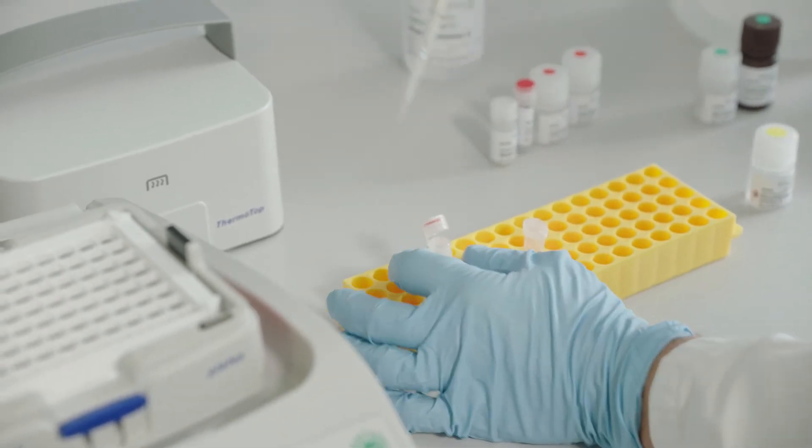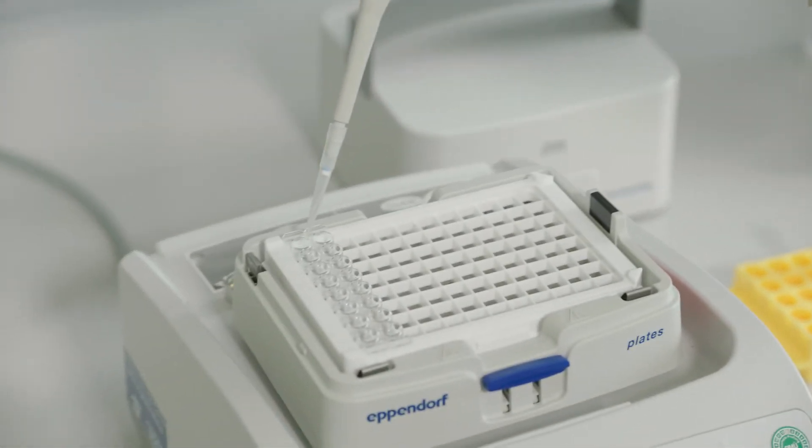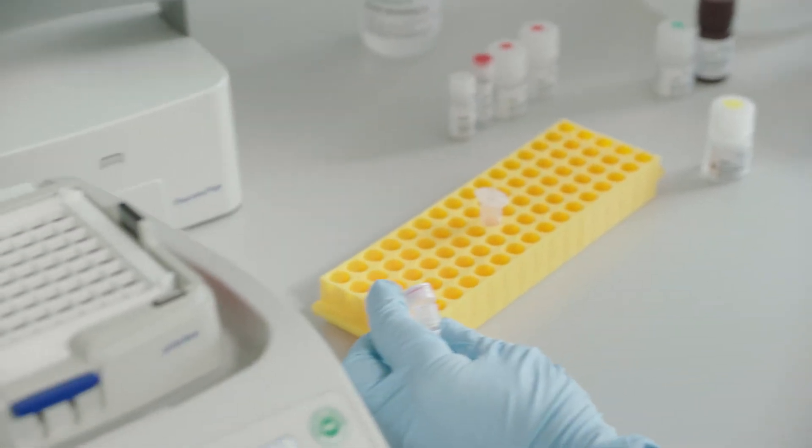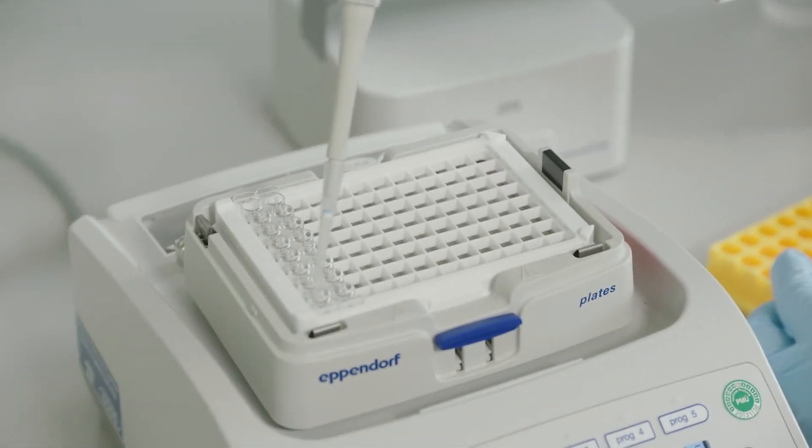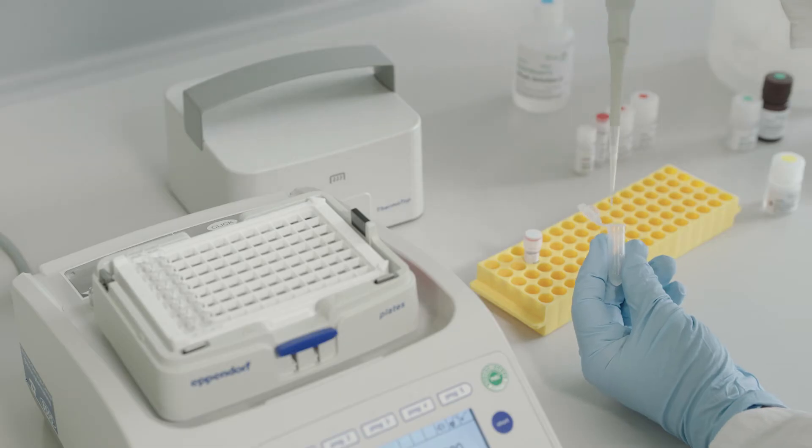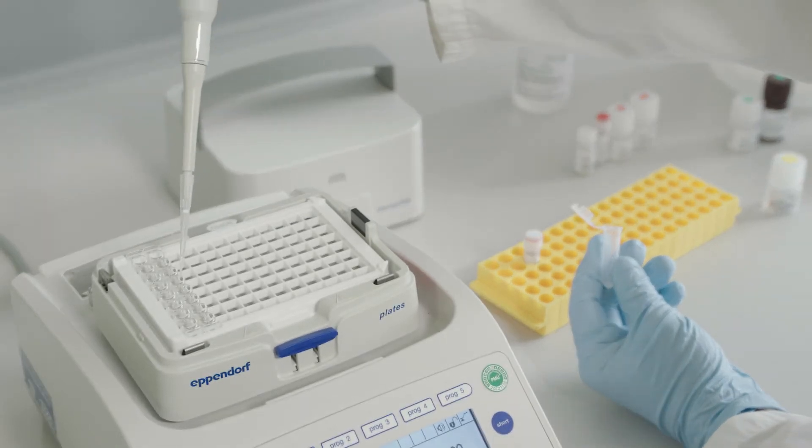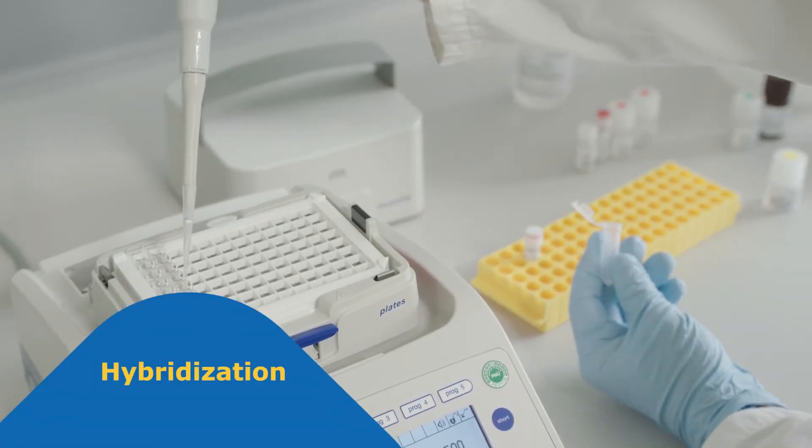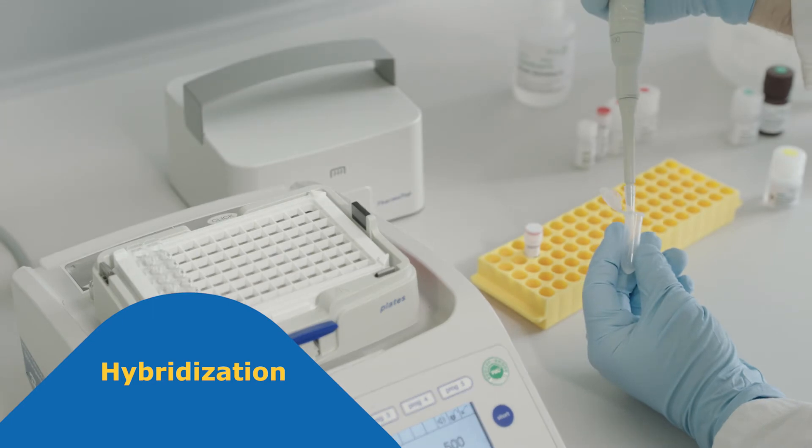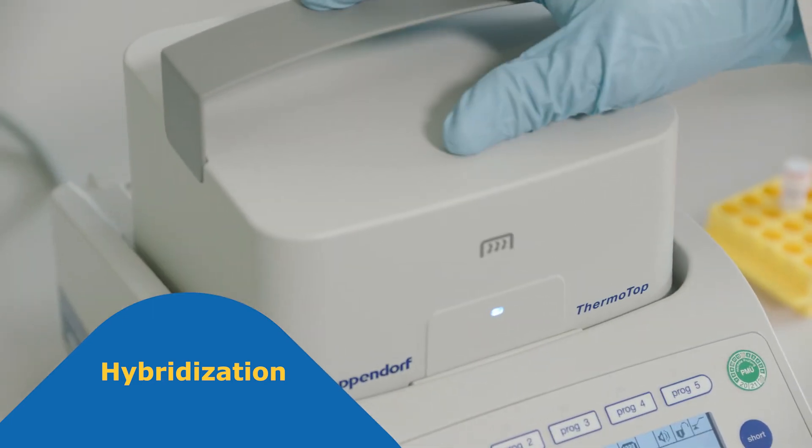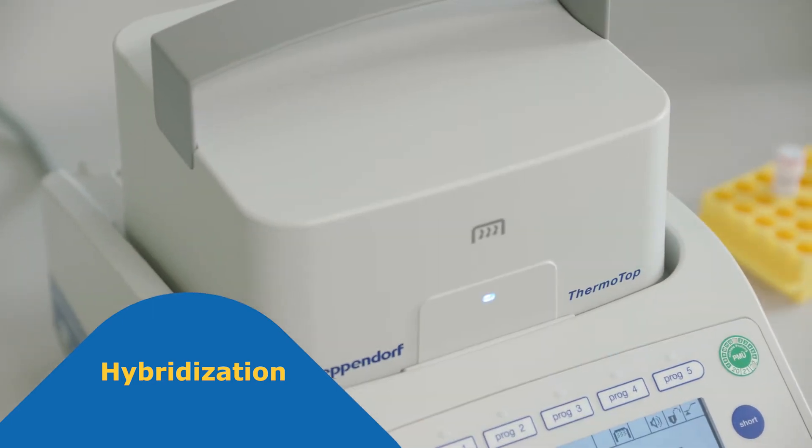After centrifugation, the RNA is in the supernatant. For hybridization with the probes to form a sandwich complex, RNA-containing supernatant and standard solution are added to the corresponding wells of the prepared microplate, which is then covered with a lid and incubated for 10 minutes.